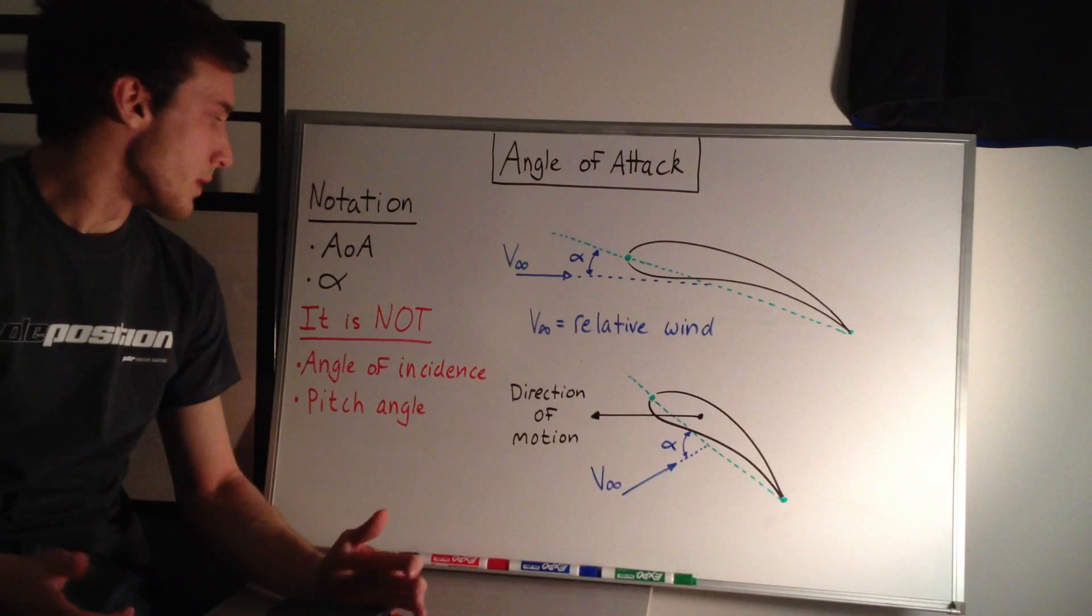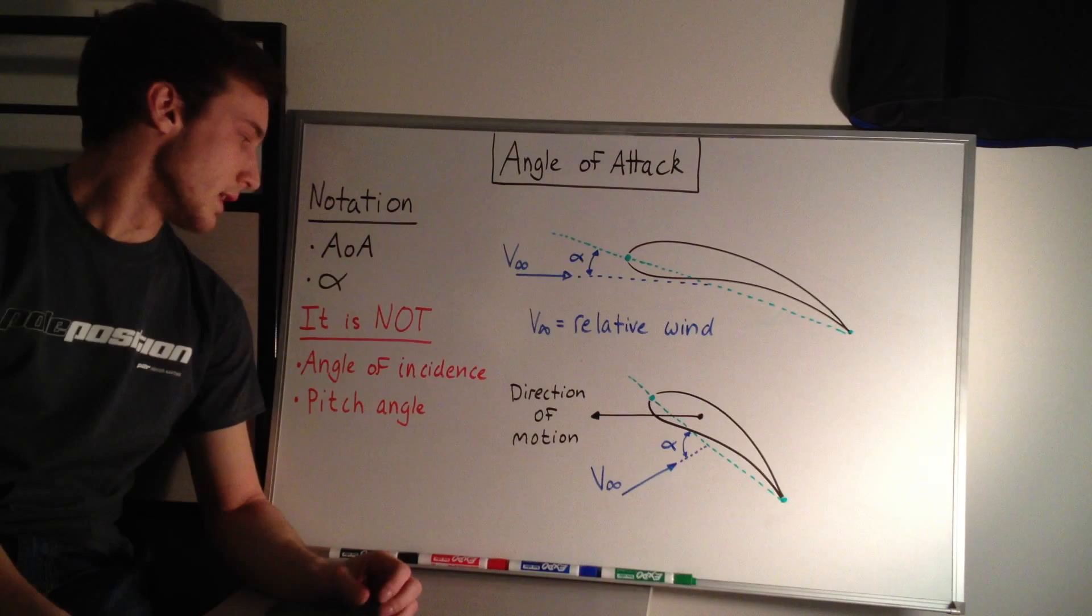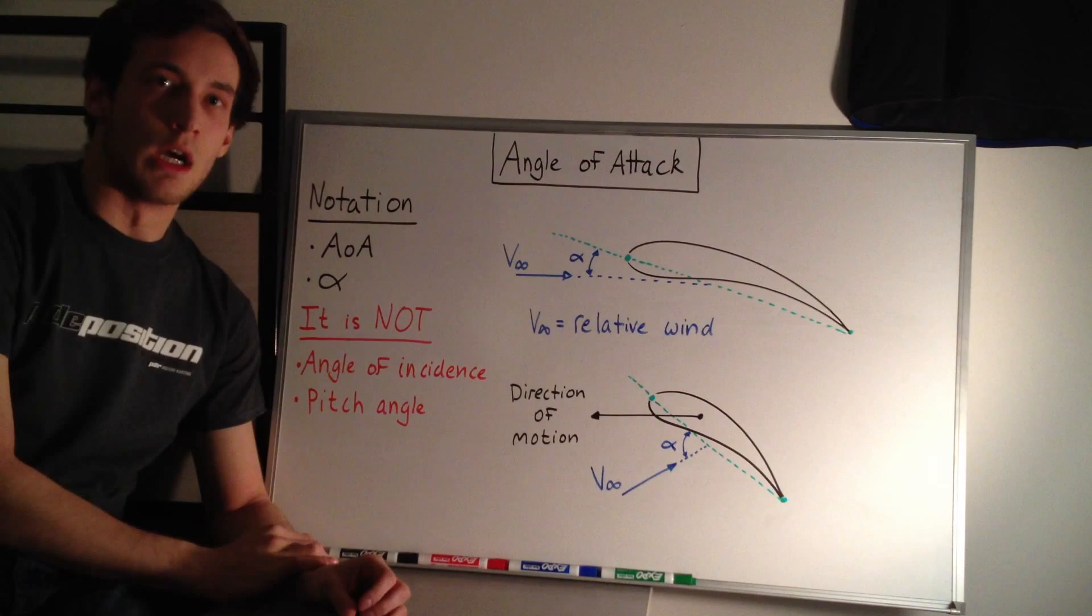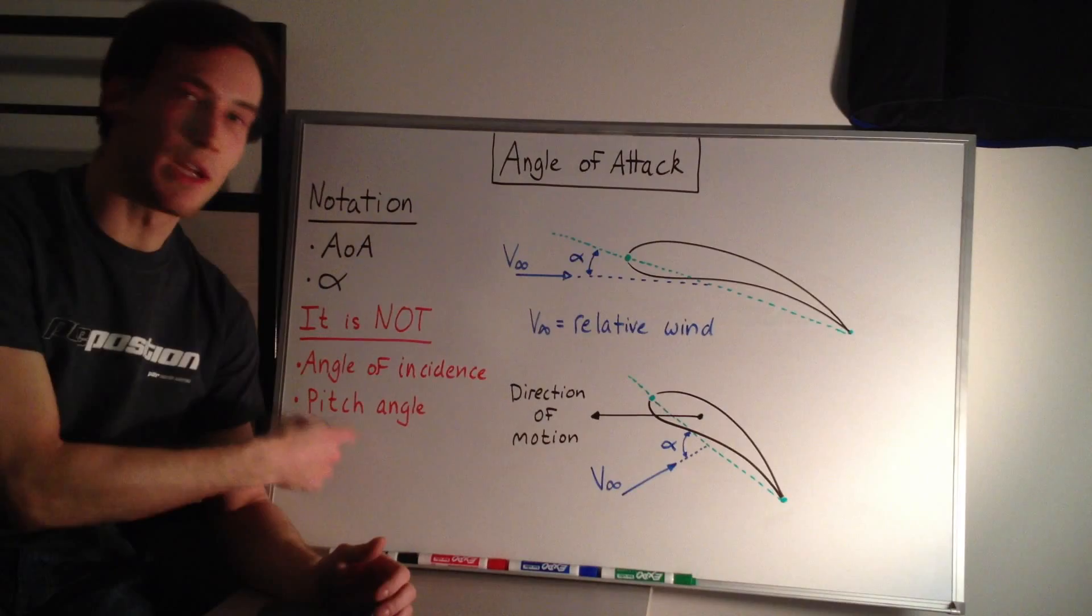So before we can talk about what the angle of attack is, we should just say what it actually isn't. So one of them is it is not the angle of incidence, and it is not the pitch angle of the plane, and it's also not the flight path angle of the plane. I'll talk about those in subsequent videos. And so one caveat is that your pitch angle might at one point be the same as your angle of attack, but that doesn't mean it's the same thing.